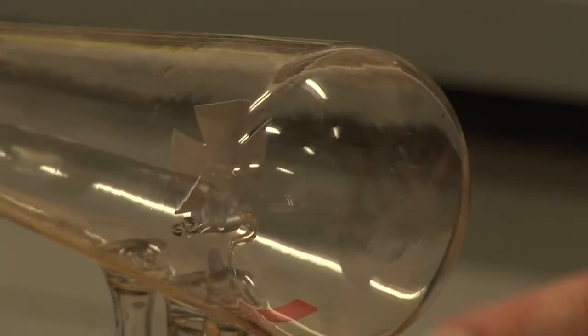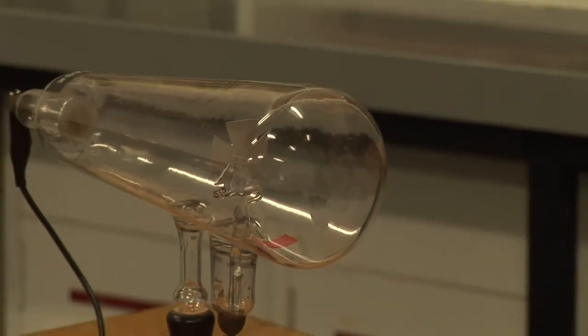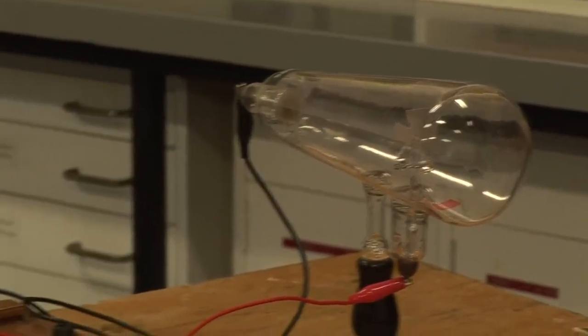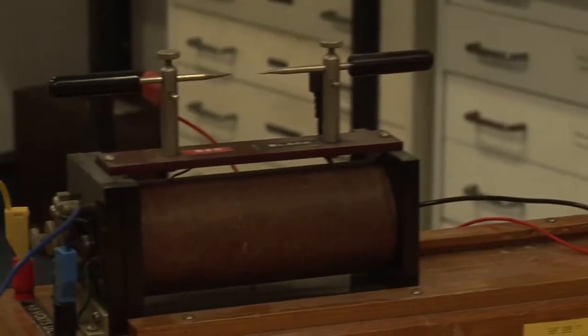At the end of the tube, we've got a phosphor. If electrons hit the phosphor, then it glows a nice green color.